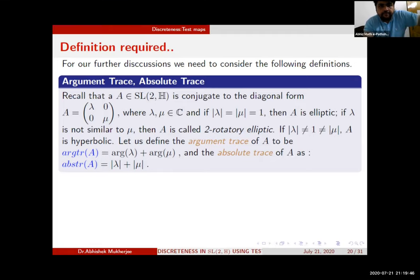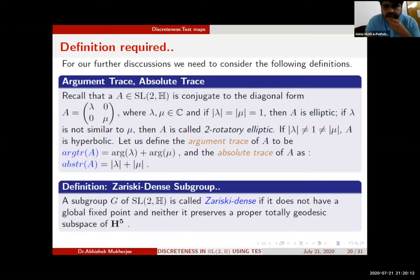I need to define two objects. Let us suppose that A belongs to SL(2,H) and consider this form: A = (λ, 0; 0, μ). Then we define arg(tr(A)) to be arg(λ) + arg(μ) and |tr(A)| as |λ| + |μ|.